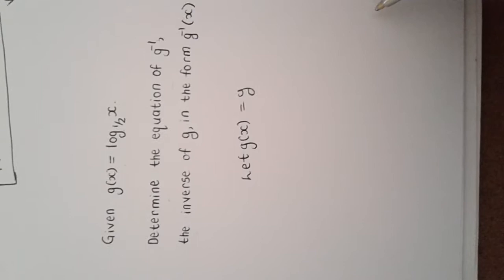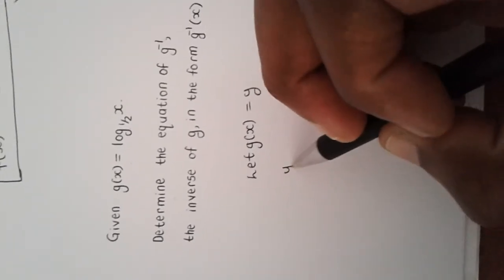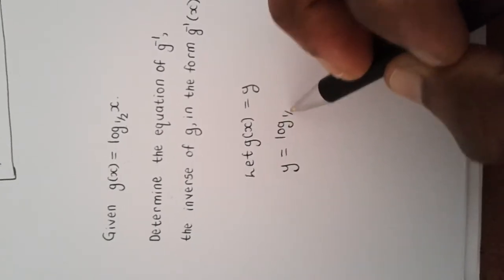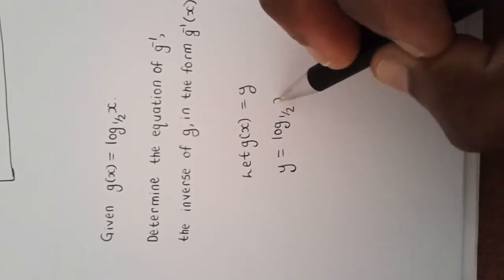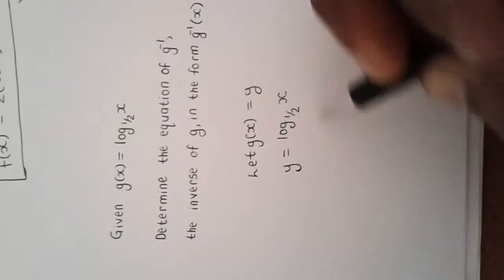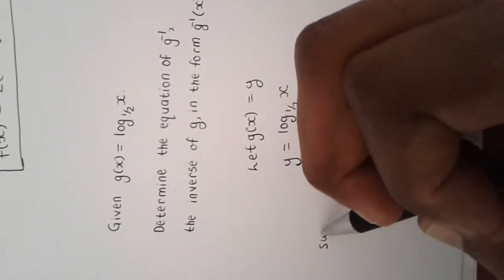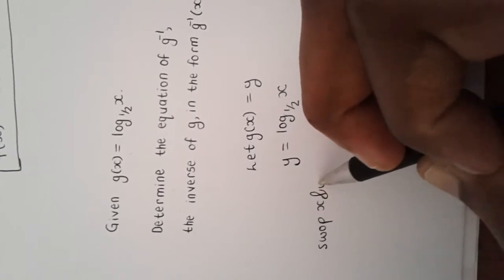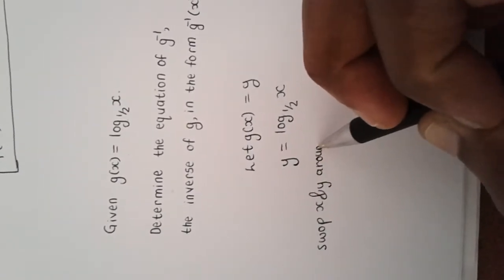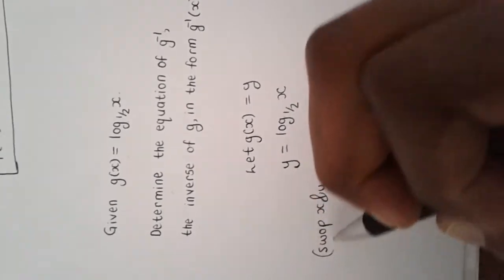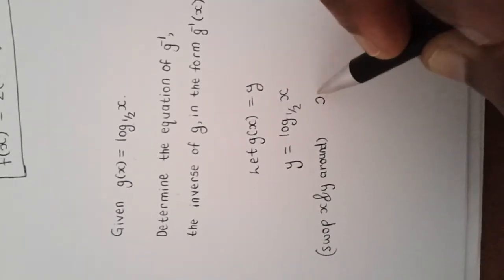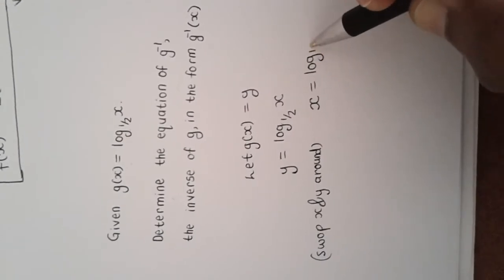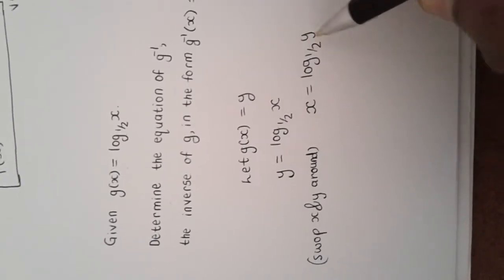So we have y = log base one-half of x. Now we swap x and y around, which gives us x = log base one-half of y.